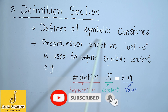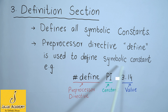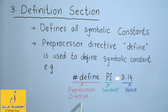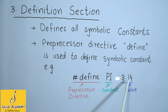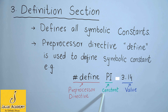The third section is the definition section. The definition section defines all symbolic constants. The preprocessor directive define is used to define symbolic constants. For example, #define PI 3.14 — here #define is a preprocessor directive and PI is a symbolic constant. The purpose of writing this line is assigning the value 3.14 to the symbolic constant PI. I can then use this constant anywhere in my program without needing to assign PI's value again and again.